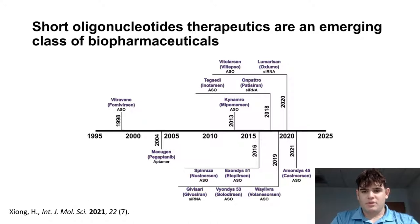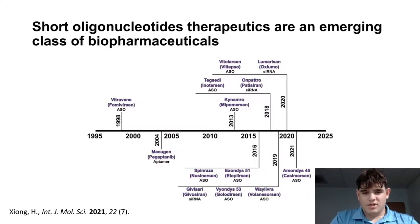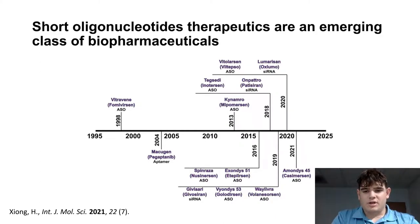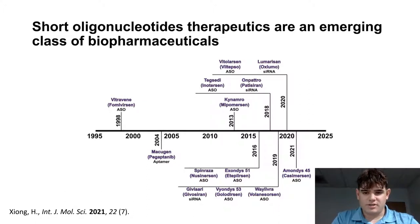Short oligonucleotide therapeutics are an emerging class of biopharmaceuticals to treat a wide variety of diseases, including those that are inaccessible to current protein-based and small molecule-based approaches. The first short oligonucleotide drug approved by the FDA occurred in 1998, and since then we've seen an increase in the number approved. Generally, short oligonucleotide drugs are either antisense oligonucleotides, or ASOs, or short-interfering RNAs, siRNAs — the exception being Macugen, which is an aptamer.